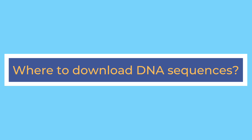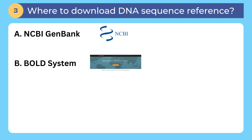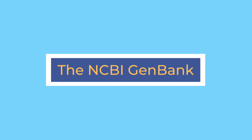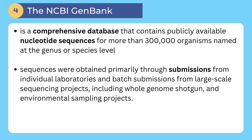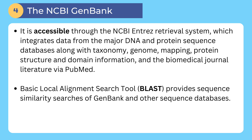Where can you download DNA sequences? DNA sequences can be downloaded from the NCBI GenBank and BOLD System websites. GenBank is a comprehensive database that contains publicly available nucleotide sequences for more than 300,000 organisms named at the genus or species level. Sequences were obtained primarily through submissions from individual laboratories and batch submissions from large-scale sequencing projects, including whole genome shotgun and environmental sampling projects. It is accessible through the NCBI and Entrez retrieval system, which integrates data from the major DNA and protein sequence databases along with taxonomy, genome, mapping, protein structure, and domain information, and the biomedical journal literature via PubMed. The basic local alignment search tool or BLAST provides sequence similarity searches of GenBank and other sequence databases.